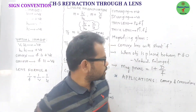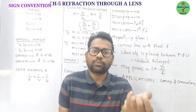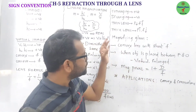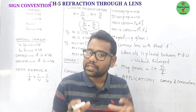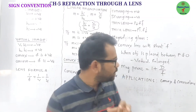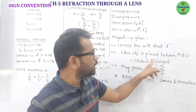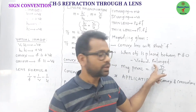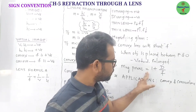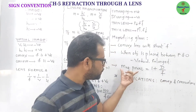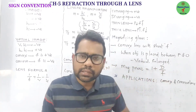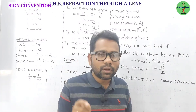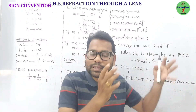A magnifying glass or simple microscope is used to see tiny objects as enlarged. A convex lens with a short focal length is preferred. This corresponds to the sixth case of the convex lens, where the object is between the focus and optic center, forming a virtual enlarged image. The magnifying power of a simple microscope is given by M = 1 + D/f. To increase magnifying power, use a thick convex lens with a short focal length.